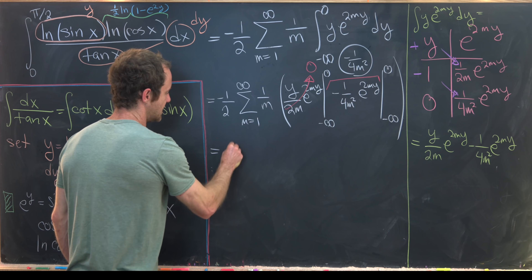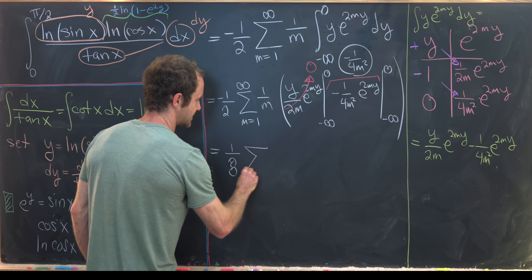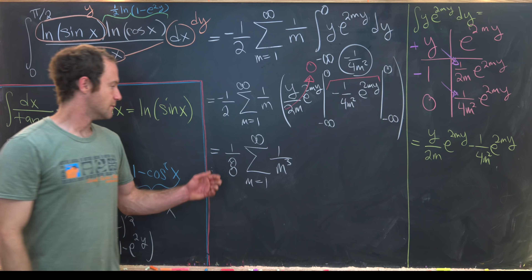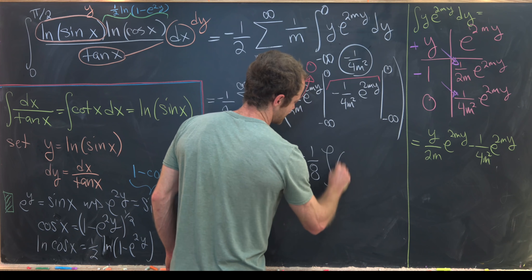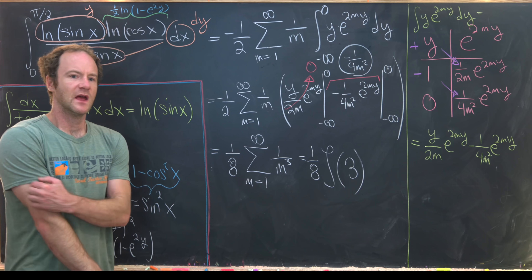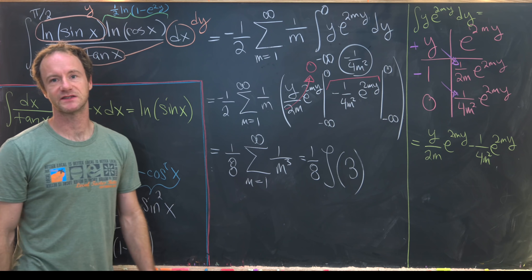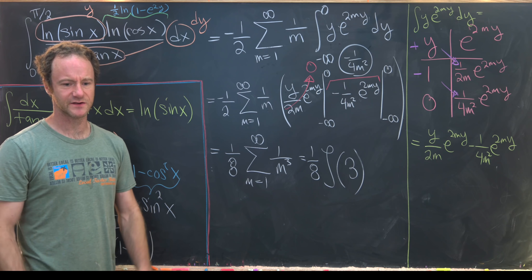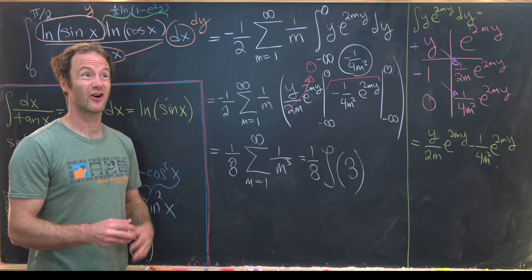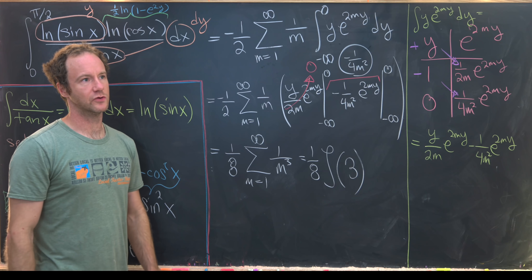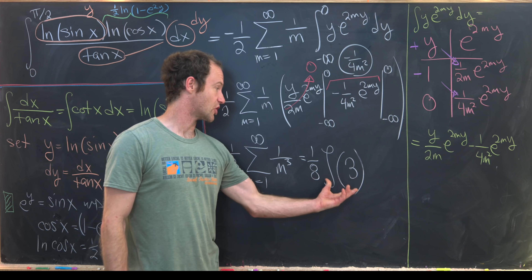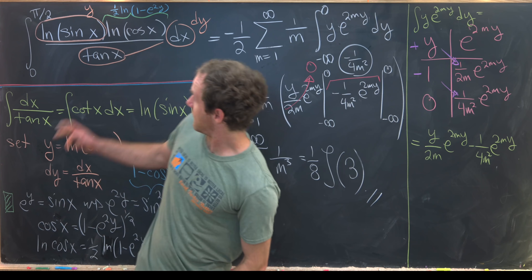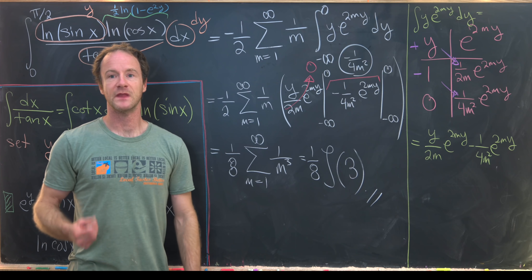Taking the −¼ factor out and combining with the −½ outside gives a positive ⅛ overall. We then have ⅛ times the sum from m = 1 to ∞ of 1/m³, which is exactly ⅛ times the Riemann zeta function evaluated at 3. The odd values of the Riemann zeta function are very important — there's a conjecture that they are algebraically independent of other well-known transcendentals like e and π. So the value of our goal integral is ζ(3)/8.